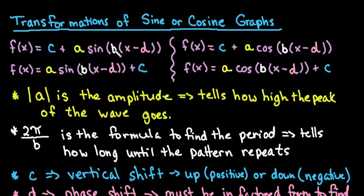What I have here is two different ways that it might show up in a textbook. We have f(x) = c + a sin(b(x - d)), or it can also be written with the sine where the plus c is on the outside of the parentheses back behind. Same thing for cosine, the c can either be in the front or it can be at the back on the outside as long as it's on the outside of the parentheses.